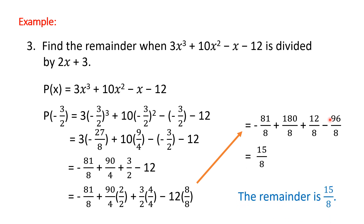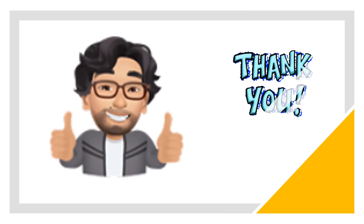Therefore, the remainder upon dividing 3x³ + 10x² - x - 12 by (2x + 3) is 15/8. Thank you for listening and God bless us all.